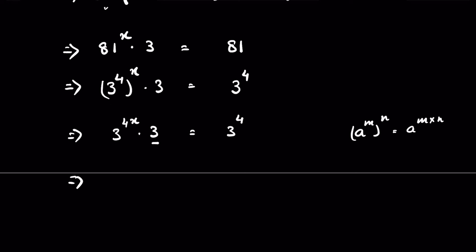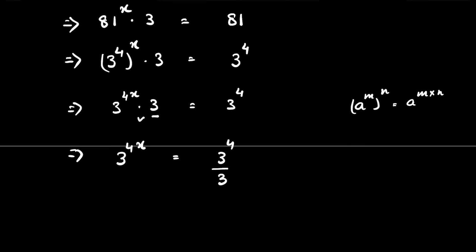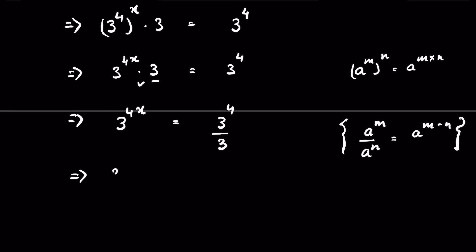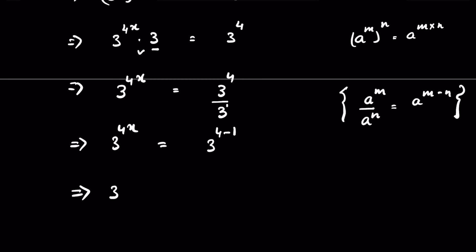Now we send the 3 to the right-hand side. Since it is multiplication, it becomes division: 3 raised to the power 4x equals 3 raised to the power 4, upon 3. Using the identity a raised to the power m upon a raised to the power n equals a raised to the power m minus n, we get 3 raised to the power 4x equals 3 raised to the power 4 minus 1, which is 3 raised to the power 3.